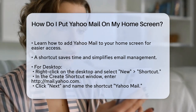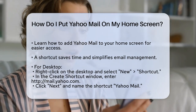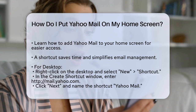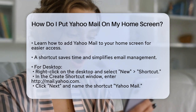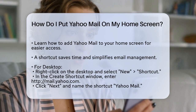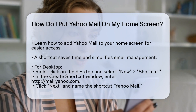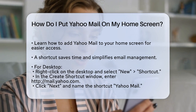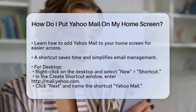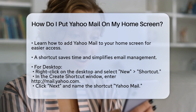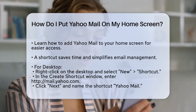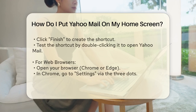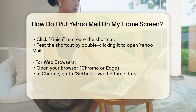On your desktop, to add a Yahoo Mail shortcut, follow these simple steps. Right-click on an empty spot on your desktop, select New from the drop-down menu, and click Shortcut. A new shortcut will be placed on your desktop and the Create Shortcut window will pop up. Type http://yahoo.com in the 'Type the location of the item' field.